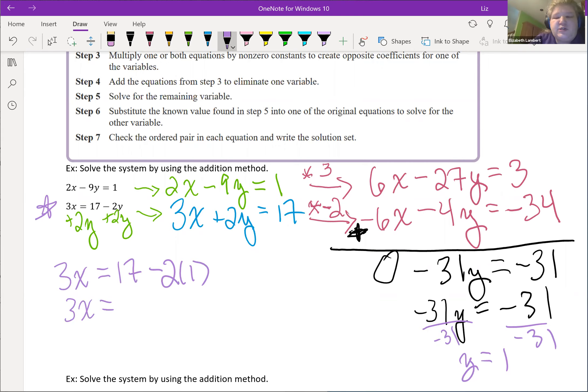So that is 2 times 1 is 2, 17 minus 2 is 15, and we get 5 for the x.